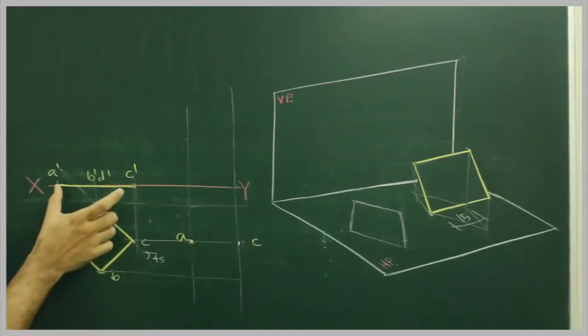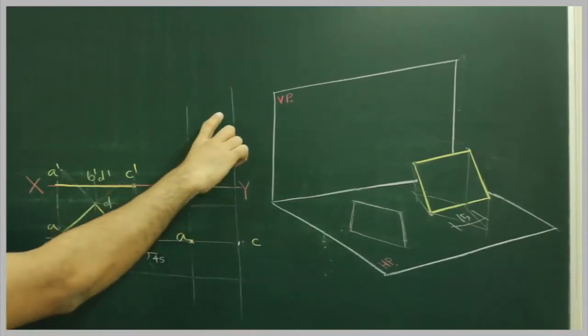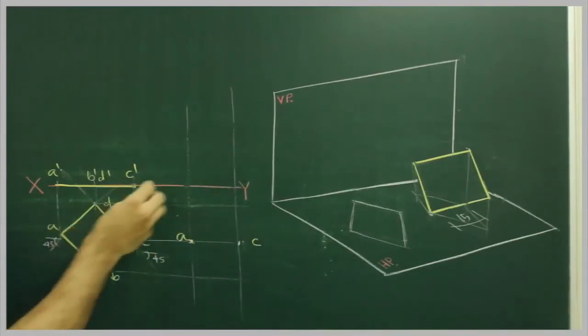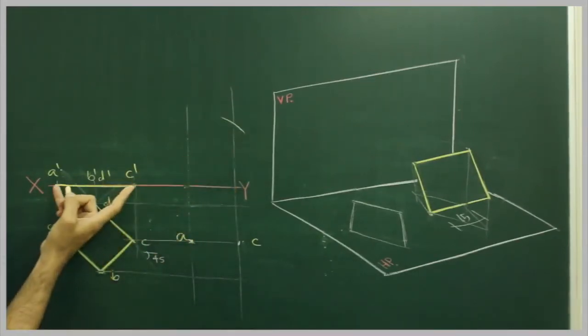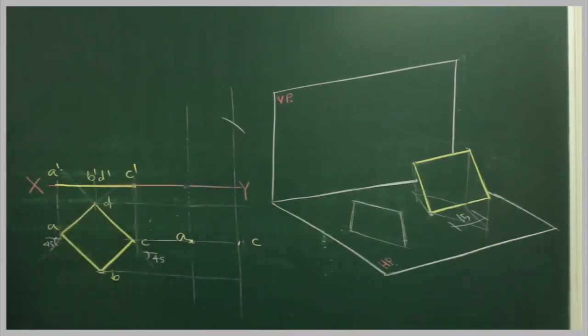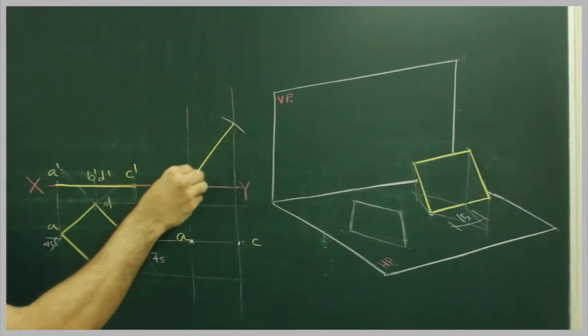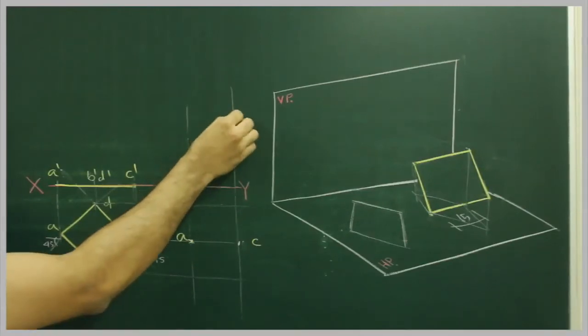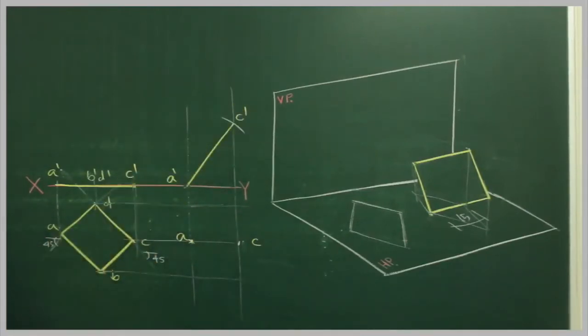After that, I will take A' to C' in my compass. And from here, I will cut it on this side. Take this and from here, we will cut it on this side. So you get A' and C'. Remember that this distance is 15.